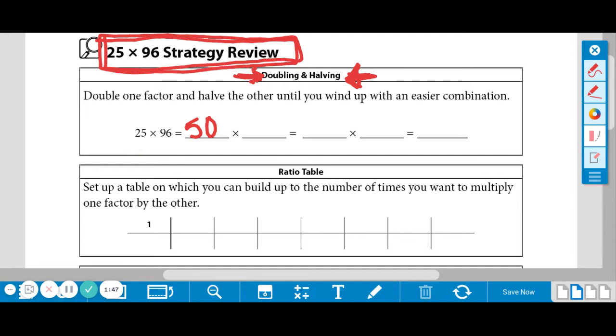Okay. So we doubled 25, and now we're going to half the other number, which is 96. So 96 halved is 48. Those aren't really easier to multiply, so we're going to keep going. I'm going to double the 50 again to 100. I'm going to half 48 to 24.